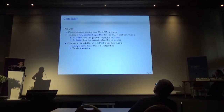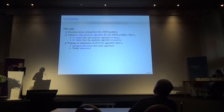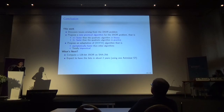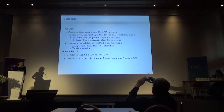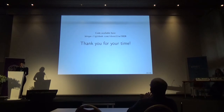In conclusion, this work discusses issues arising from the 3-XOR problem. We propose an algorithm that is better in theory and practice than the quadratic algorithm. We also propose an adaptation of an older algorithm that is asymptotically faster than any other but totally impractical. As future work, we would like to compute a 128-bit 3-XOR on SHA-256, and since unlike others we do not have an army of Bitcoin miners, we expect to form the list in about 2 years using a single outdated Bitcoin miner. Thank you for your attention.